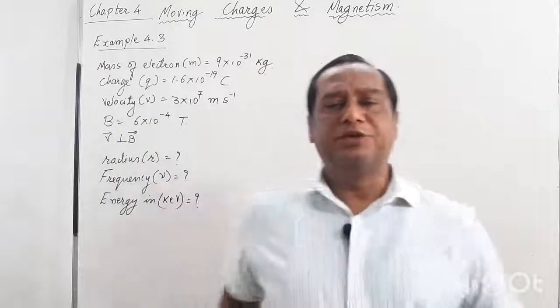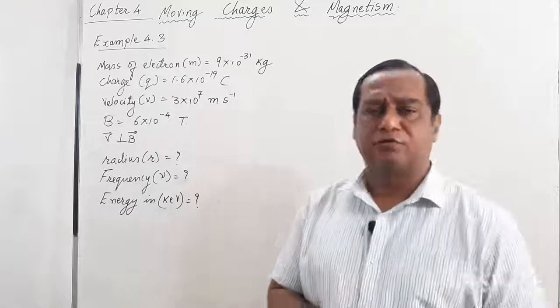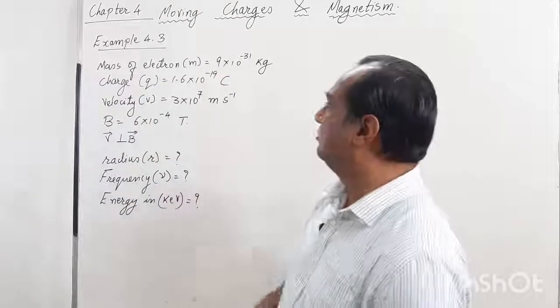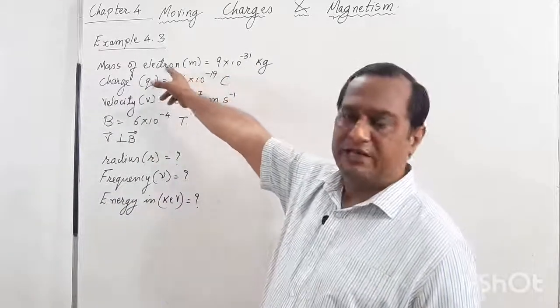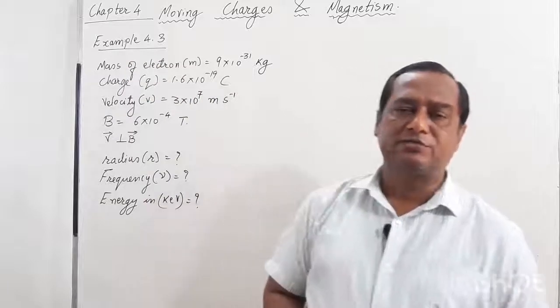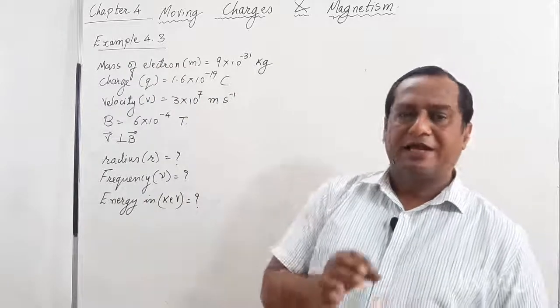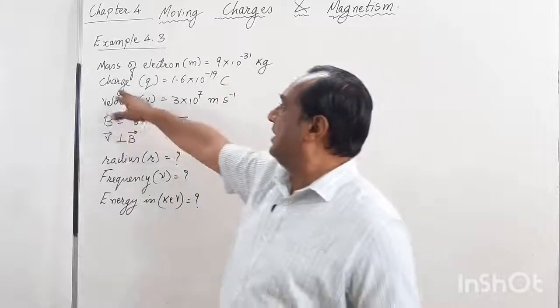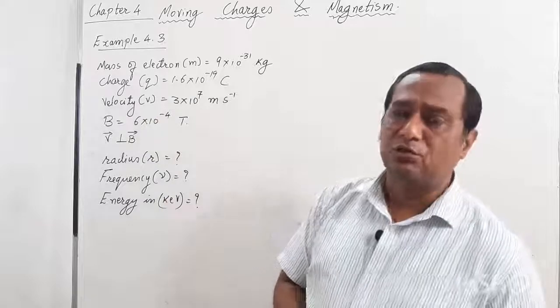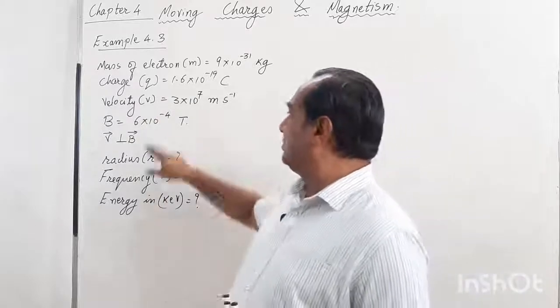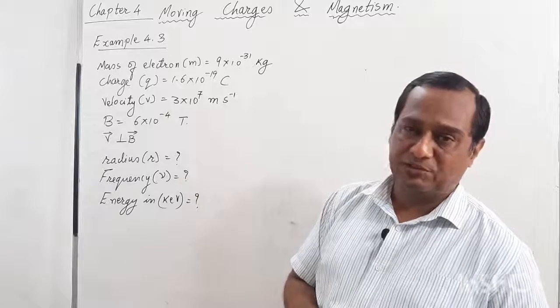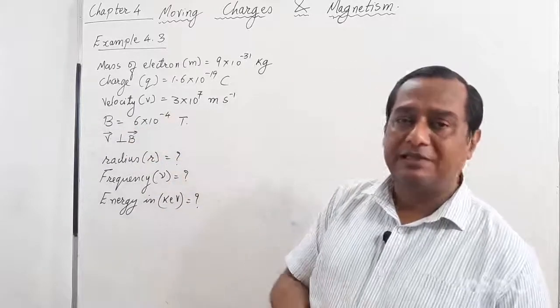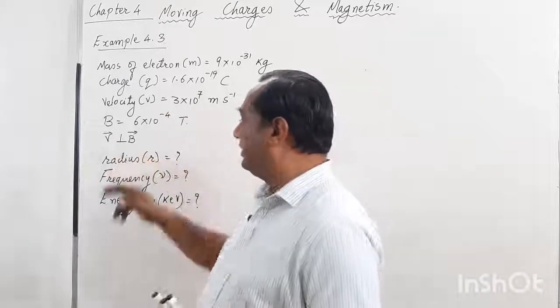Students, Example 4.3 is quite simple and a straightforward formula application. Let's solve this. First, the given data. The particle is an electron. Its mass is 9.11×10⁻³¹ kg, but the book specifies 9×10⁻³¹ kg. The electron charge is 1.6×10⁻¹⁹ coulombs. The velocity is 3×10⁷ meters per second. The magnetic field is 6×10⁻⁴ tesla, and the velocity is perpendicular to the magnetic field.